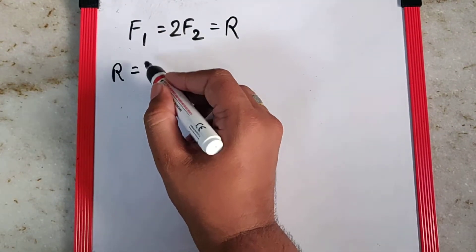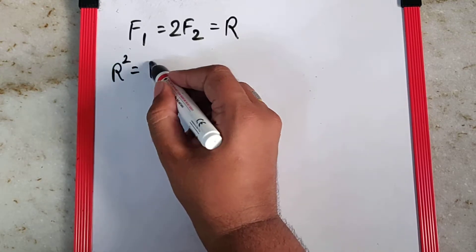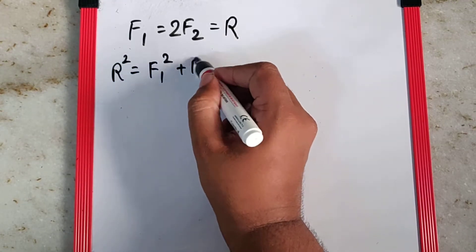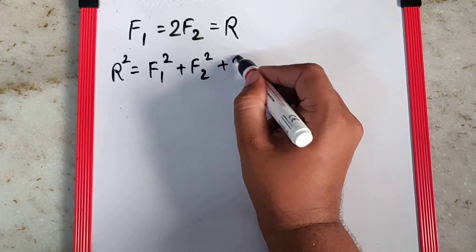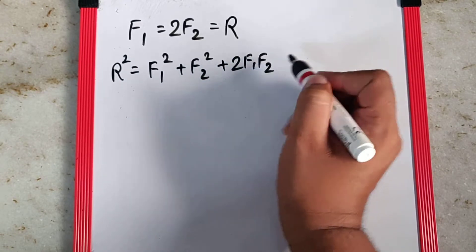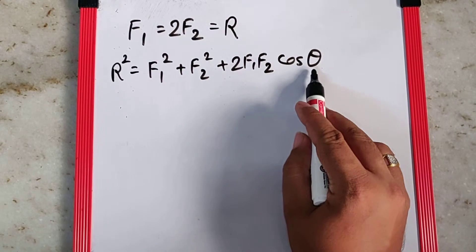Now using this, I can say by parallelogram law, R square is F1 square plus F2 square plus 2F1F2 cos theta. Now we are supposed to find this angle theta.